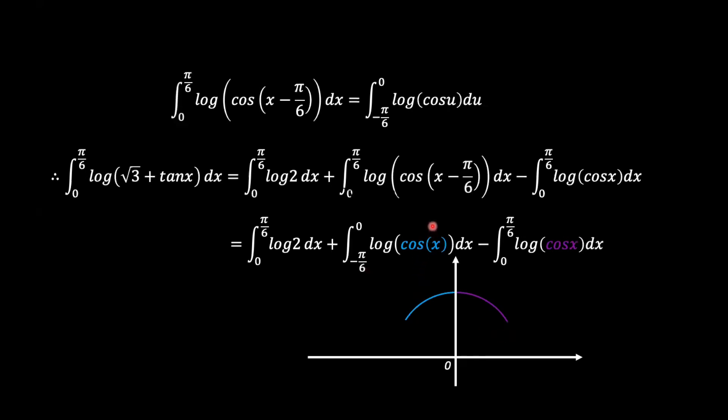So meaning that these two integrals are equal, and so those would cancel out and we have 0 from there. So as we said, the integral of log cosine x from negative pi over 6 to 0 is the same as the integral of 0 to pi over 6 of log cosine x because it's an even function around 0 in that domain.